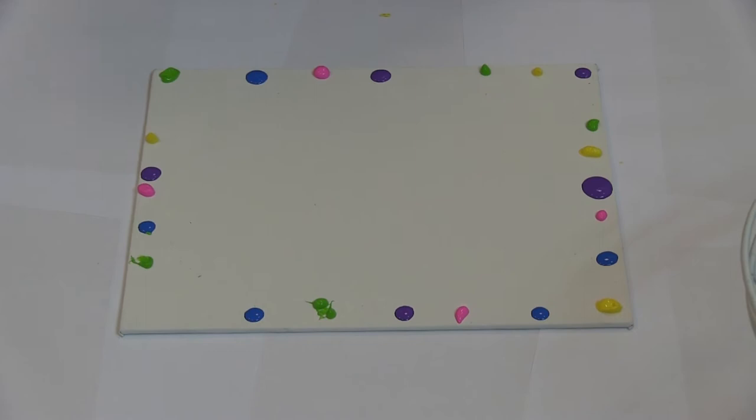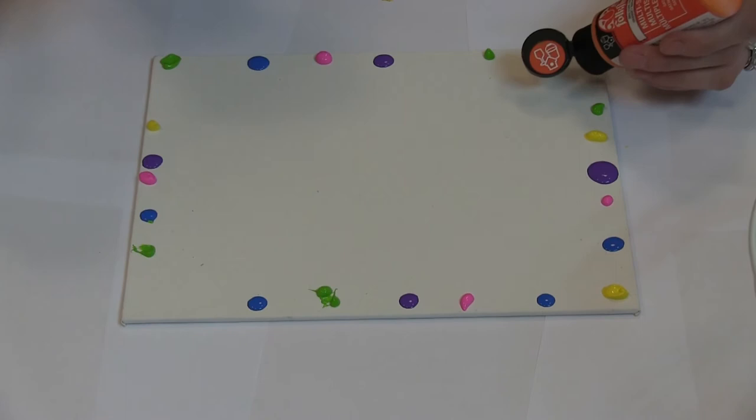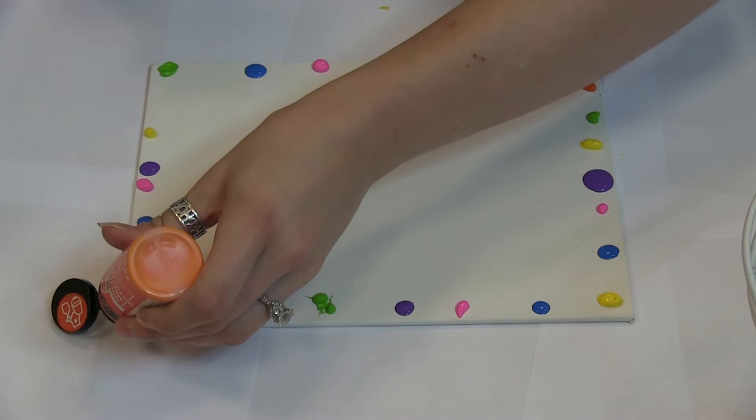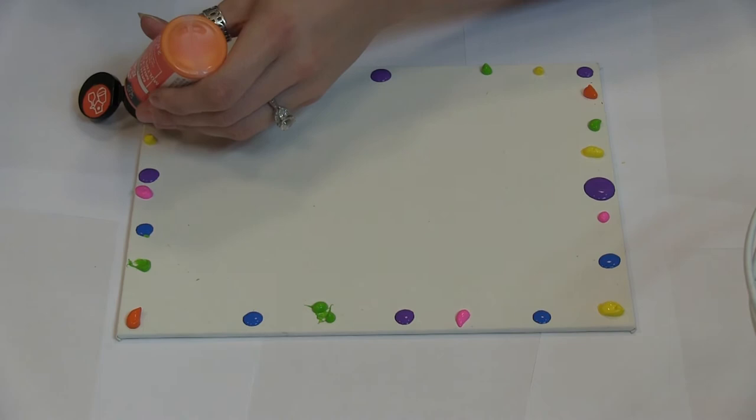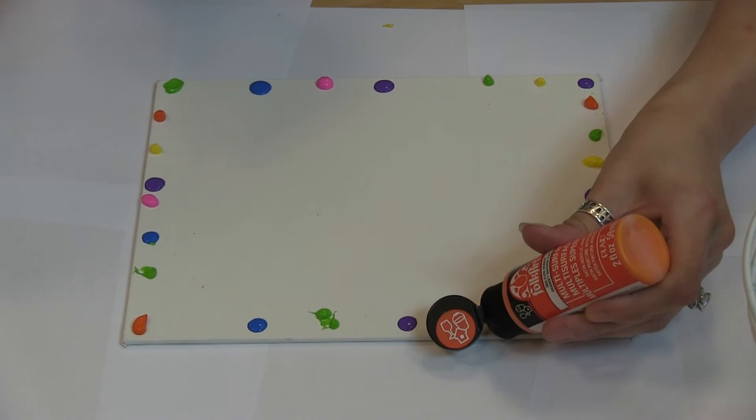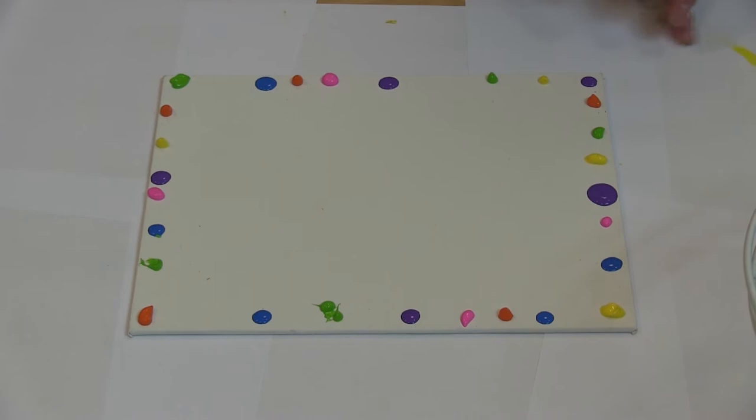All right, got some orange. And all these materials we did have here around the library. You do not have to use a canvas. You can always use a piece of computer paper you have at home. But you probably want to use a lot less paint than I'm using on this canvas. I got a little bit of yellow on me.